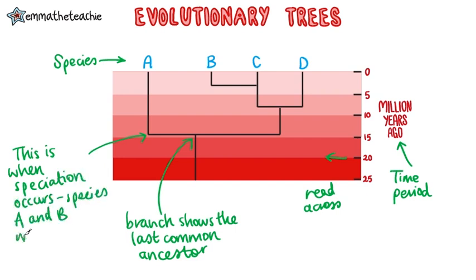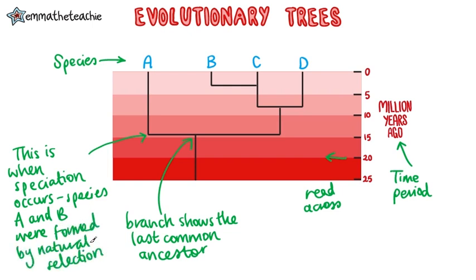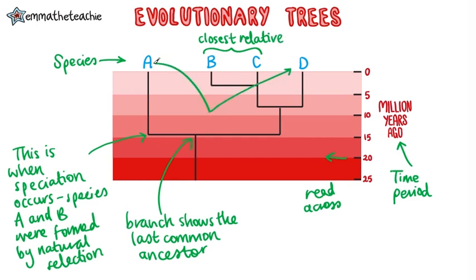Species A and B and all of the other species evolved through natural selection. Branches that split recently are closely related species, like B and C, whereas branches that split a long time ago are distantly related species, like A and D.